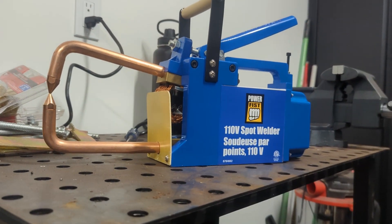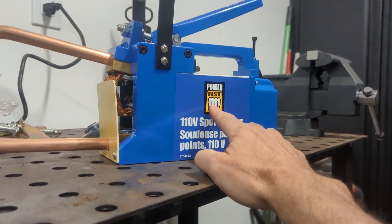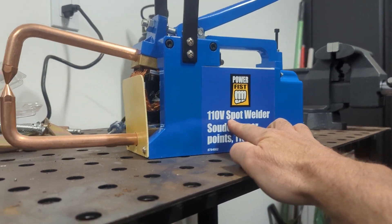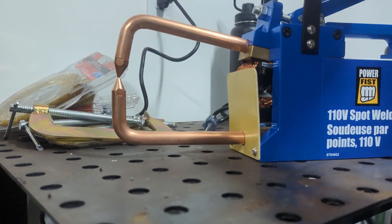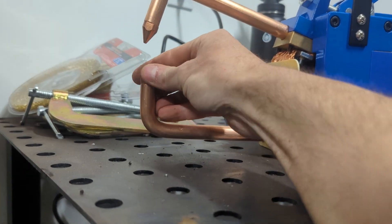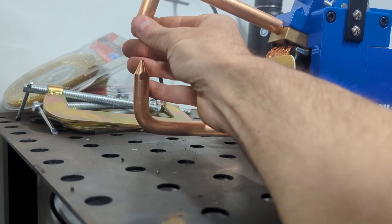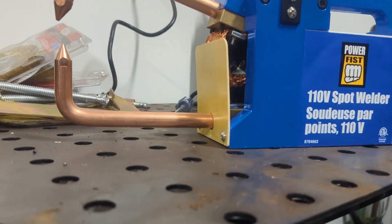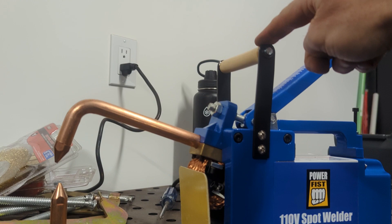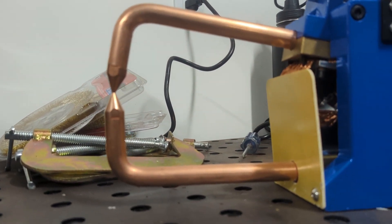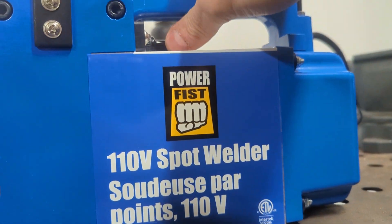I've got the unit out of the box - this is the Power Fist 110 volt spot welder. I've installed the tips, there's two tips that I've just screwed into place. It also comes with two spare tips. I've also installed this wooden handle. Then all you do is bring down the pinchers like this and then activate the toggle switch.